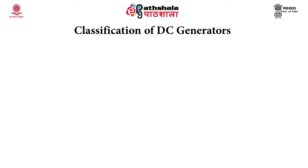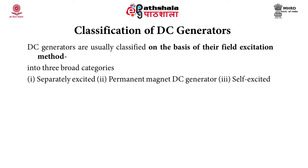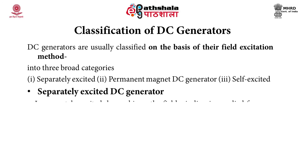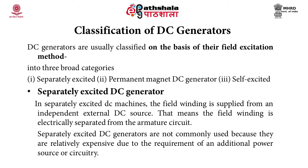Coming to the classification of DC generators, these are usually classified on the basis of their field excitation method, into three broad categories: separately excited, permanent magnet DC generator, and self-excited generator. In separately excited DC machines, the field winding is supplied from an independent external DC source, meaning the field winding is electrically separated from the armature circuit. Separately excited DC generators are not commonly used because they are relatively expensive due to the requirement of an additional power source.